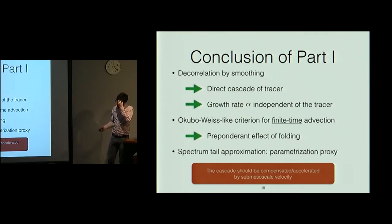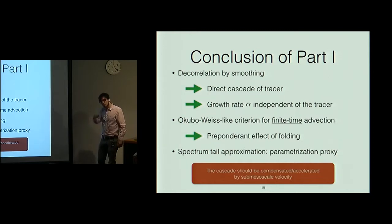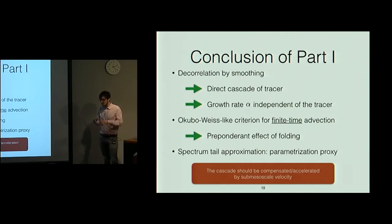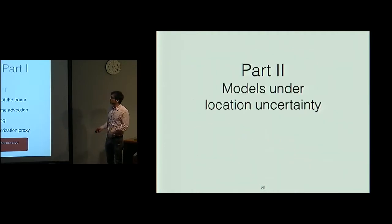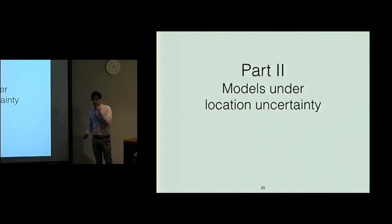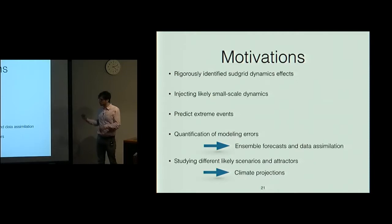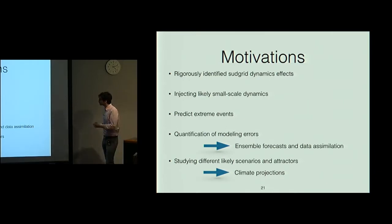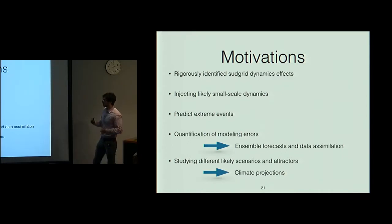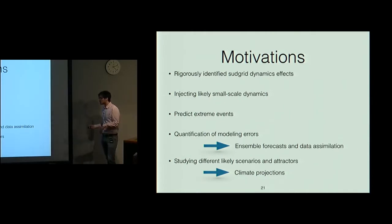In reality, the real tracer doesn't have infinitely thin filaments growing indefinitely, because there is a smaller-scale velocity which perturbs them. This small-scale velocity can compensate or accelerate the tracer cascade. So now we will add a small-scale velocity in a blind way, because we don't know it. The model under location uncertainty is a random fluid dynamic model developed for several applications: rigorously identifying the effect of sub-grid dynamics, injecting possible small-scale dynamics where simulations are poorly resolved, predicting extreme events, and quantifying model error — very important for ensemble forecast and data assimilation.